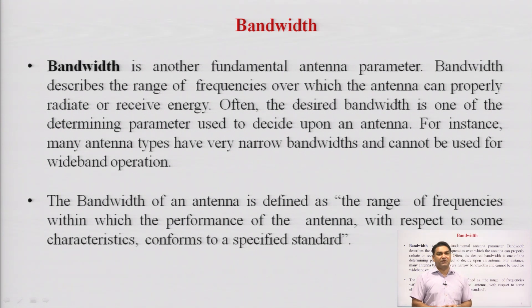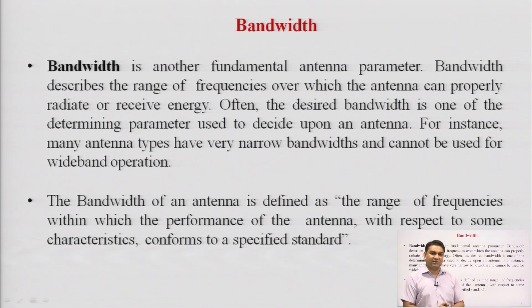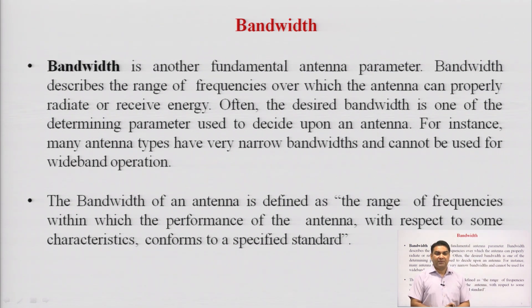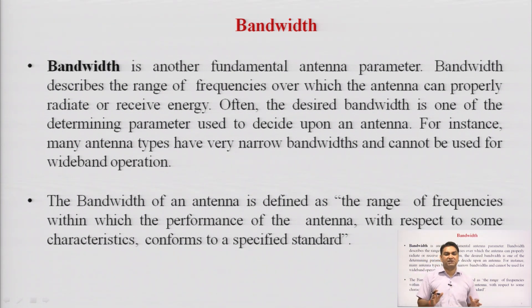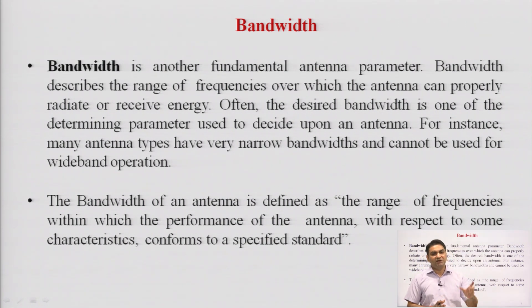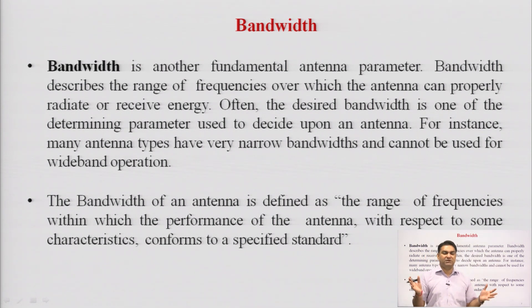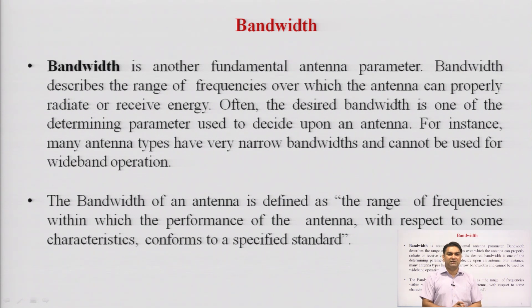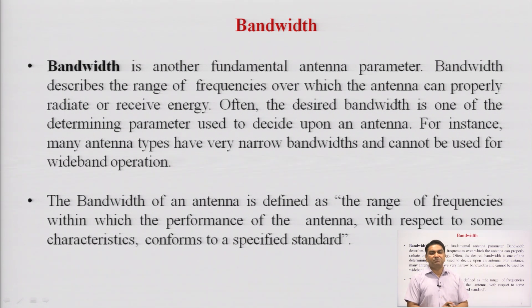The next parameter is bandwidth. We have discussed beam width for an antenna in previous lectures as an important aspect for directional characteristics. Similarly, every antenna cannot work for every frequency — all antennas are specified for a particular application over a given range of frequencies. Bandwidth is the range of frequencies at which an antenna can work. It is also defined as the range of frequencies within which the performance of the antenna with respect to some characteristics confirms a specified standard.